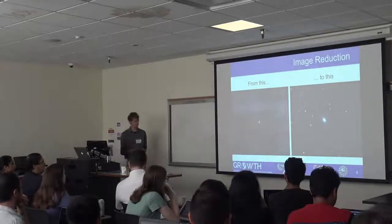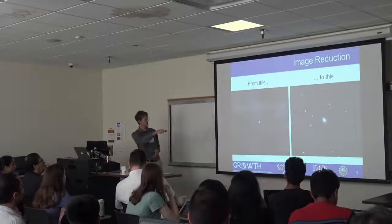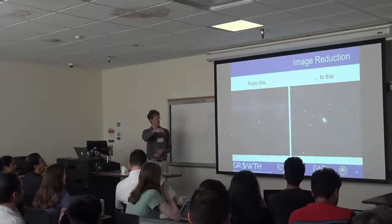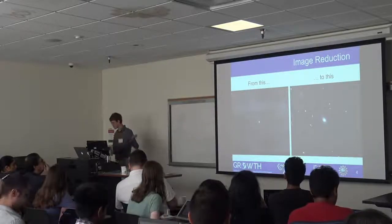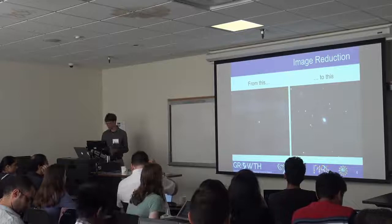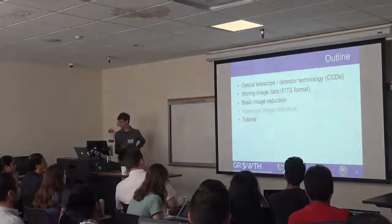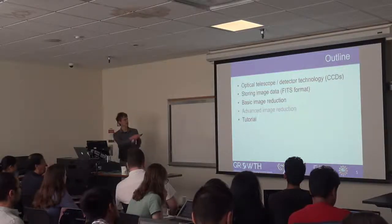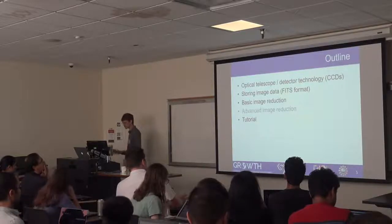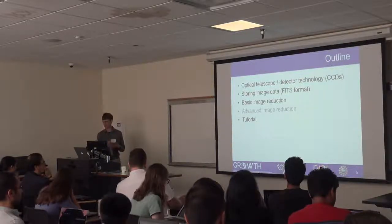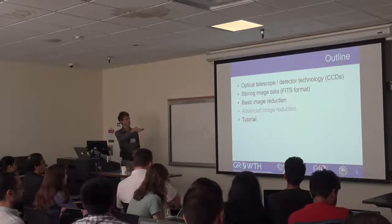The idea is we go from an image that looks like a raw image, it's got detector patterns, stripes, it's not very deep, and we reduce it. We add a bunch of images together to go deeper, and we have a nicer image of the sky that shows all the stars and galaxies, and is well calibrated. So the outline of what I'm going to tell you about today: first, a little bit of fundamentals about how telescopes work, and mainly how detectors work, since it's important to understand that to know exactly what we're doing with our data and why we need to do it.